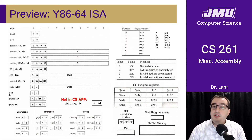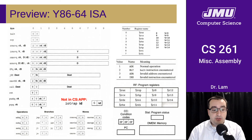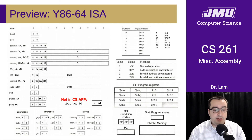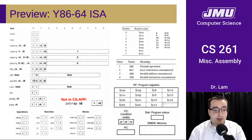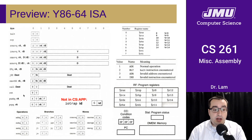We do have a jump instruction, which includes both unconditional as well as a bunch of different conditional variants, similar to x86. We also have conditional moves, which are the same as in x86. We have a call instruction and a return instruction — those also work the same way as in x86. And we have pushes and pops, which also work the same way they do in x86.